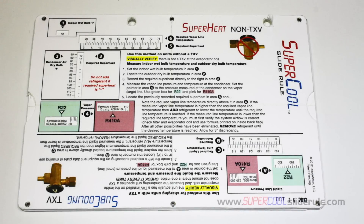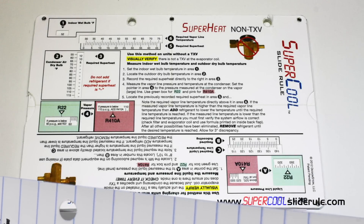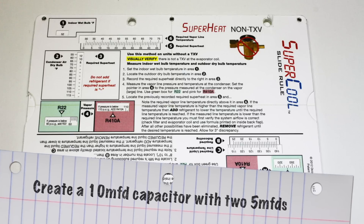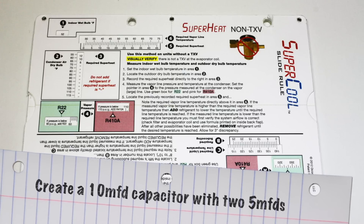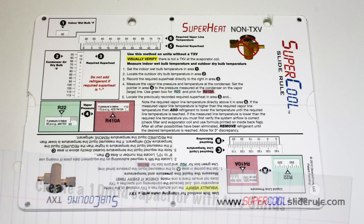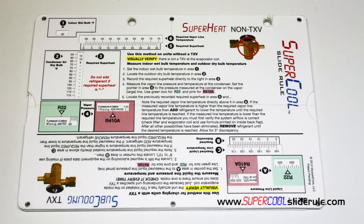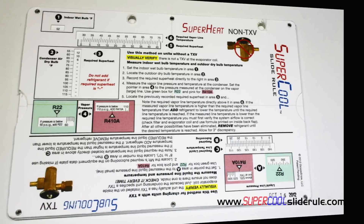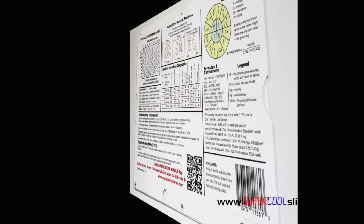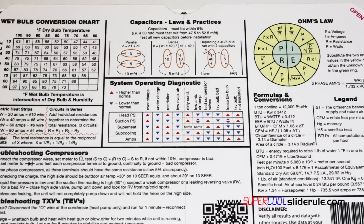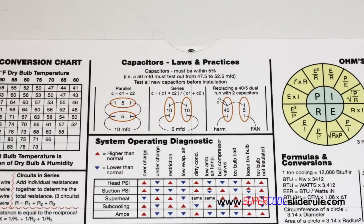Hello, Brian Nolten back with another super cool slide rule tutorial. In this tutorial, we will learn how to create a 10uF capacitor by installing two 5uF capacitors in parallel. If you have a super cool slide rule, get it out. You will find the instructions on how to perform this right here.